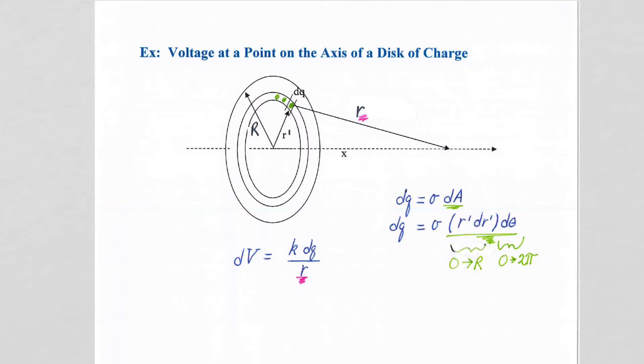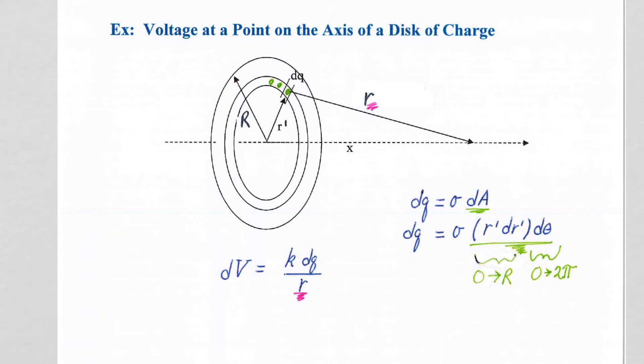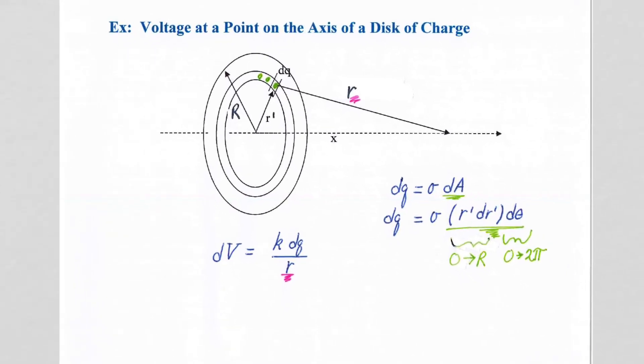The plate of charge is a more typical example of the voltage calculation where we would be using the differential version for the point particle, our dV equals k dQ on r, to calculate the voltage at a point in space. So in this case, what is the voltage along the x-axis? So what does that equal in general?